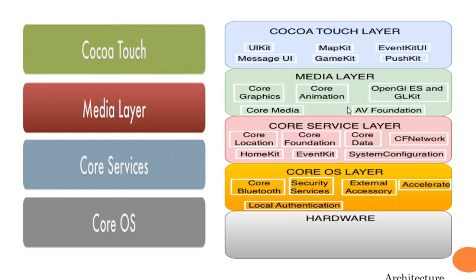The layer above the CoreServices layer is the Media layer. As its name suggests, it provides services related to media — that can be audio, video files, graphics, animations, and many more. First is Core Graphics, which is the native drawing engine for your iOS application. It provides support for image-based rendering and animation services.